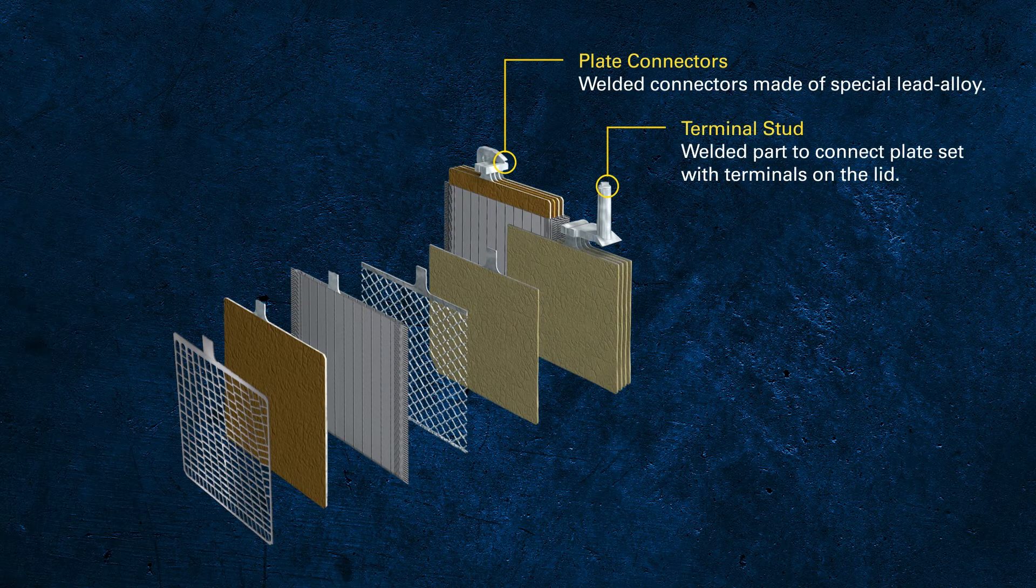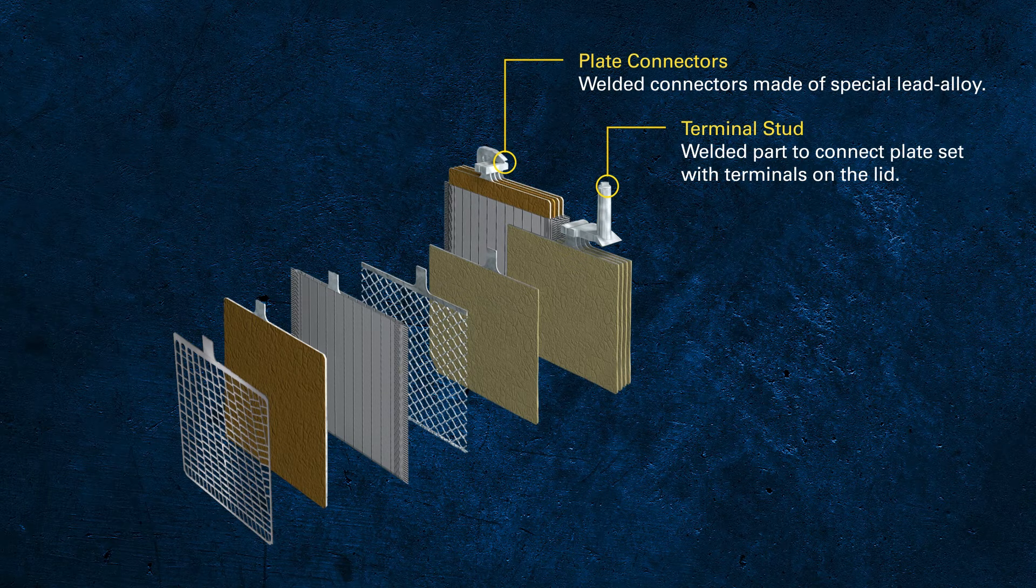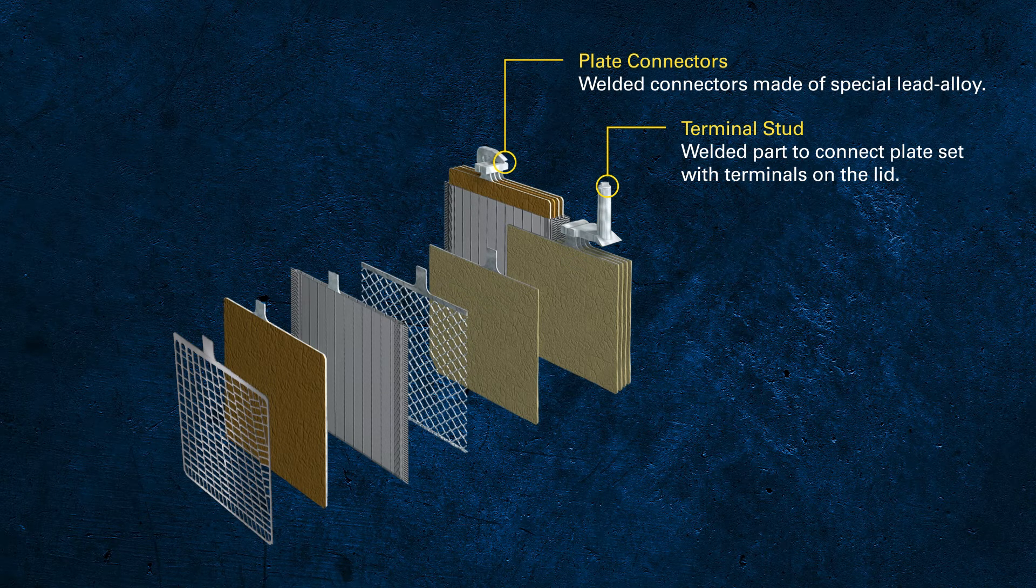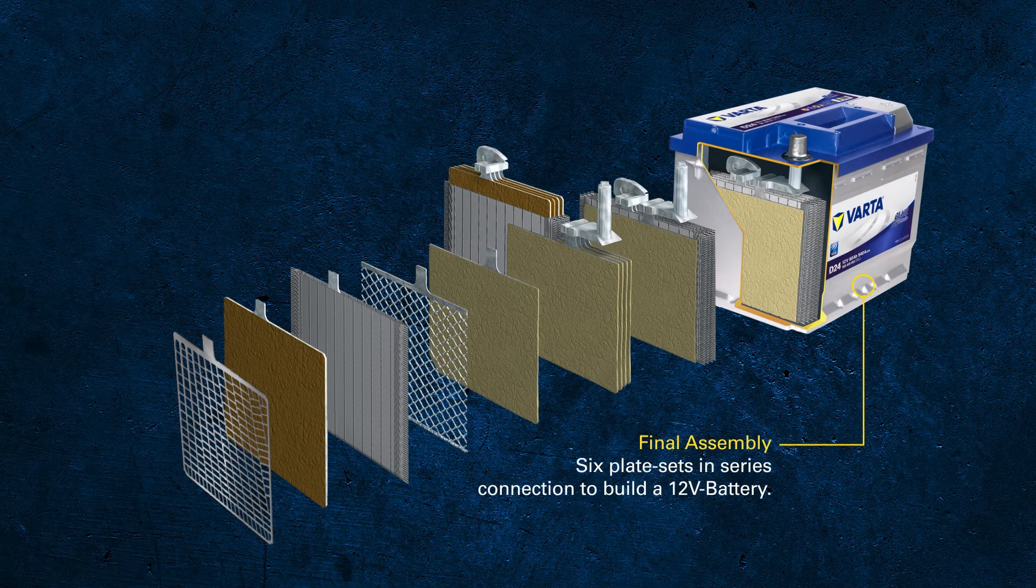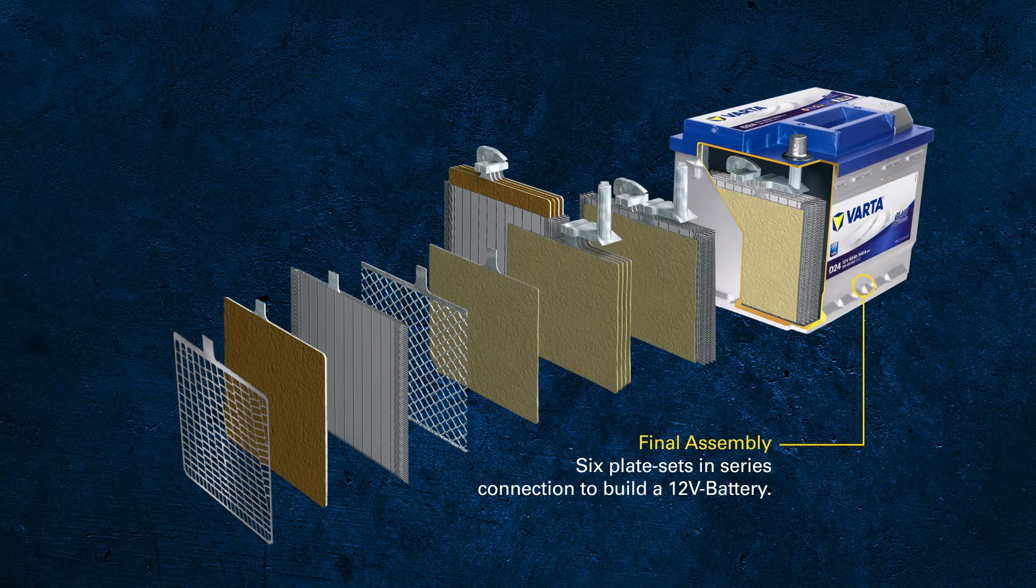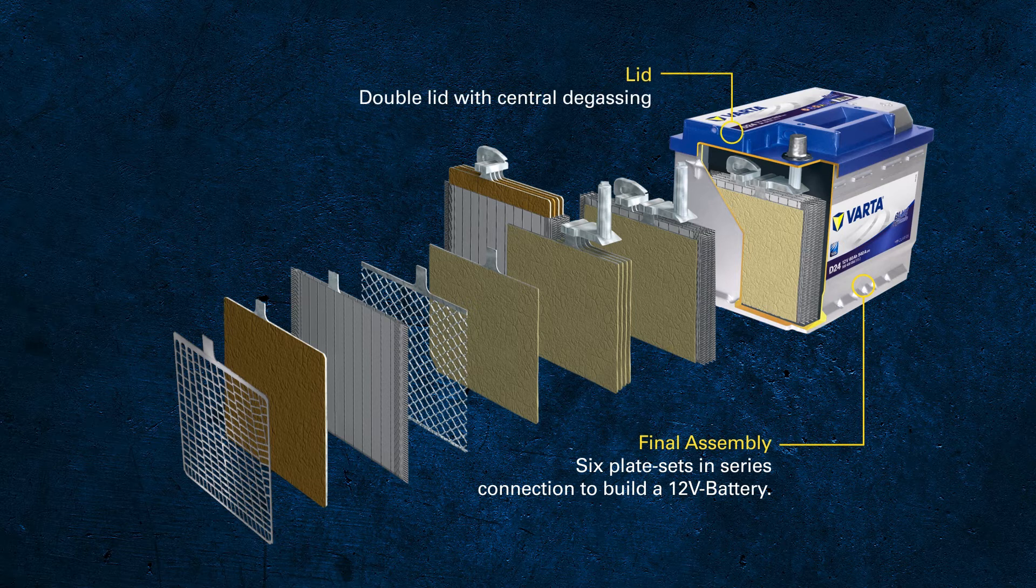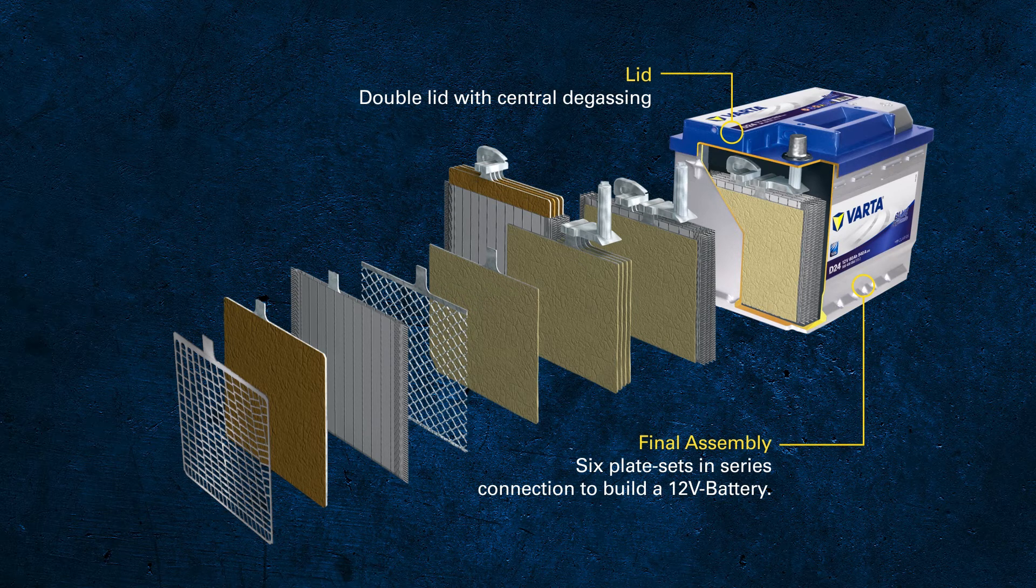The positive and negative plates are connected in parallel by a welded connector that is either connected to the battery terminal or to the next cell. In total, a 12-volt battery is made of six cells connected in series, each containing positive and negative plate sets. On top of the container there is a special lid that provides a central degassing outlet and a special flame arrester to avoid sparks from outside igniting the gases inside the battery.